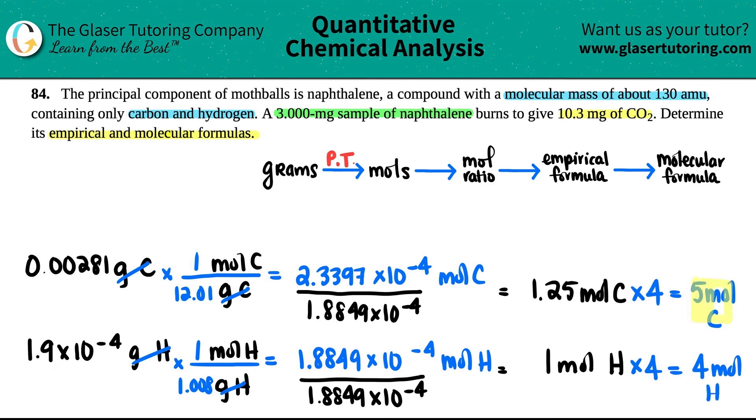Now, finally, I use these values to get me my empirical formula. So I'm just going to put that over here. Empirical formula. We'll do carbon first. So in this case, it's C5, because I have 5 carbons, and H4, because I have 4 hydrogens. So there's the one answer. My empirical formula is C5H4.